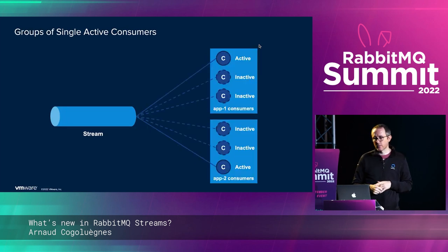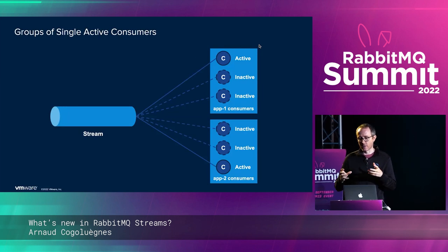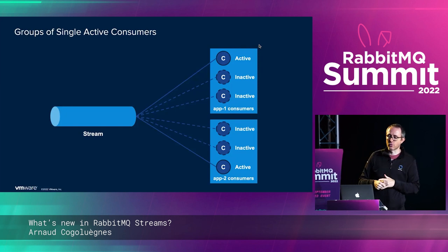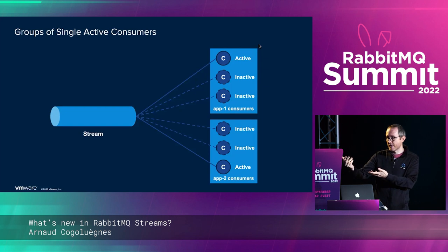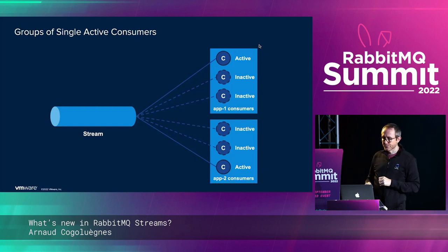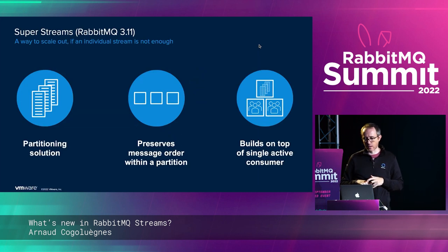It's not limited to one group — you can apply single active consumer semantics to several groups on your stream. It could be the inventory application group, the accounting application group, and so on. These are just different groups and the semantics apply only to consumers within each group. Single active consumer is a simple but useful feature.